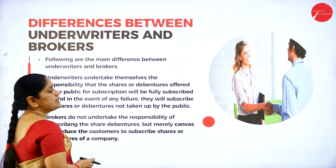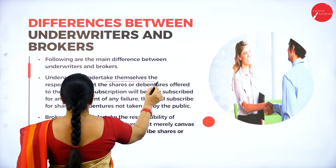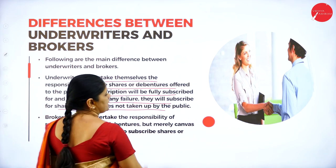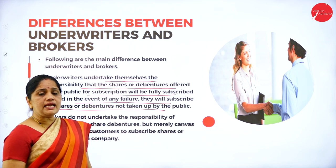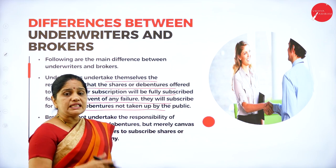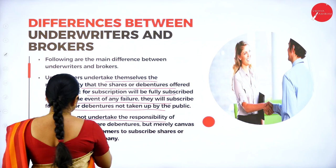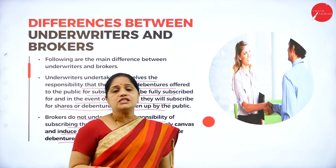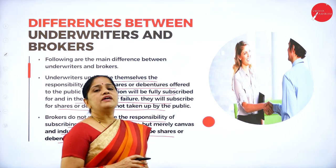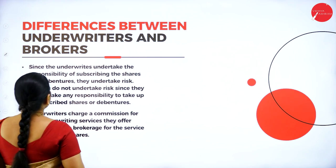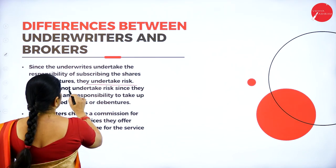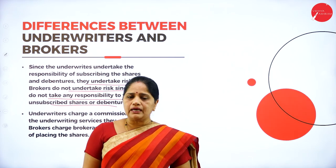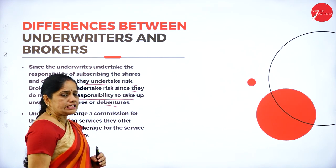Now let us see differences between underwriters and brokers. Underwriters undertake the responsibility that shares or debentures will be fully subscribed, and in the event of failure they will subscribe for shares not taken by the public. Brokers, however, do not undertake the responsibility of subscribing but merely canvas and induce customers to subscribe to shares or debentures. Since underwriters undertake responsibility, they bear the risk, whereas brokers do not assume any risk of the company.